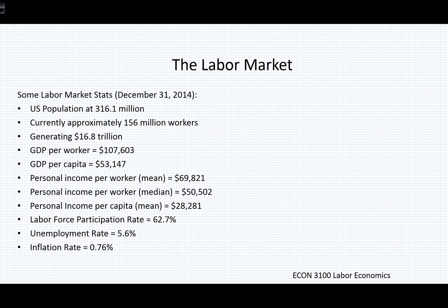If we consider how much GDP that is per worker, it works out to be $107,603, which is a fairly high level of GDP and one of the reasons we're considered the wealthiest nation on the planet. However, GDP per capita — which takes in how much GDP we have for all of our citizens, not simply for all of our workers — is barely half that at $53,147, which makes sense since only about half of our population is actually working in the United States at any point in time.